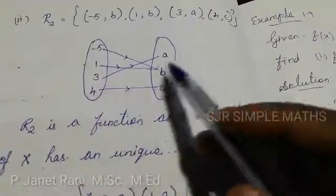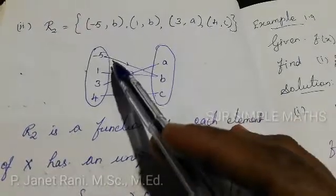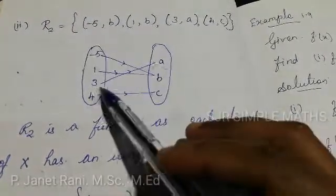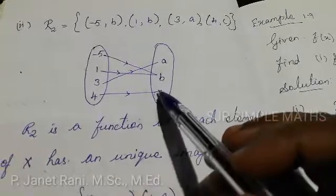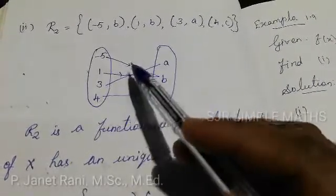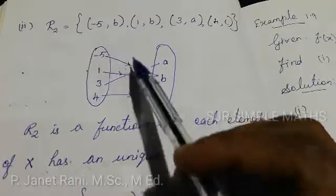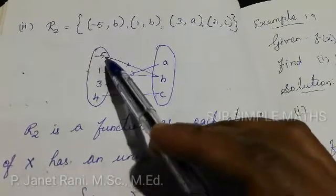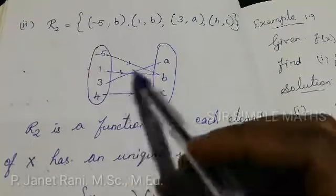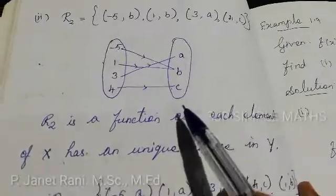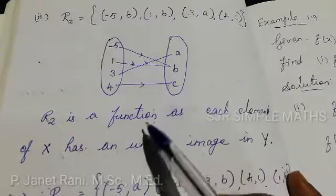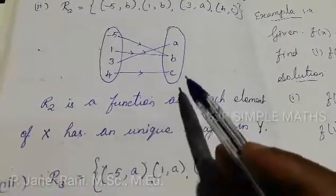Now for R2. The domain elements are covered: (-5, b), (1, b), (3, a), (4, c). All elements of X have an image in Y — -5, 1, 3, and 4 all have images. So R2 is a function.